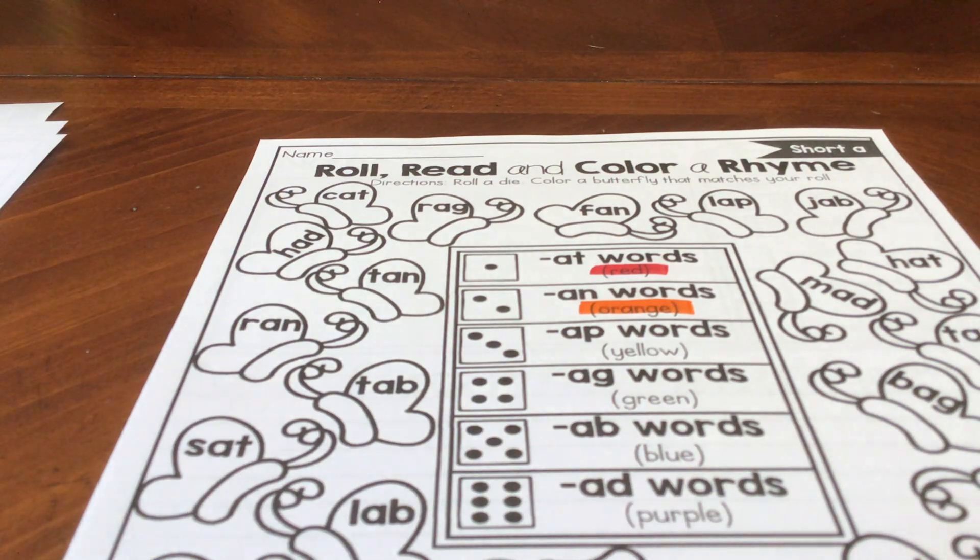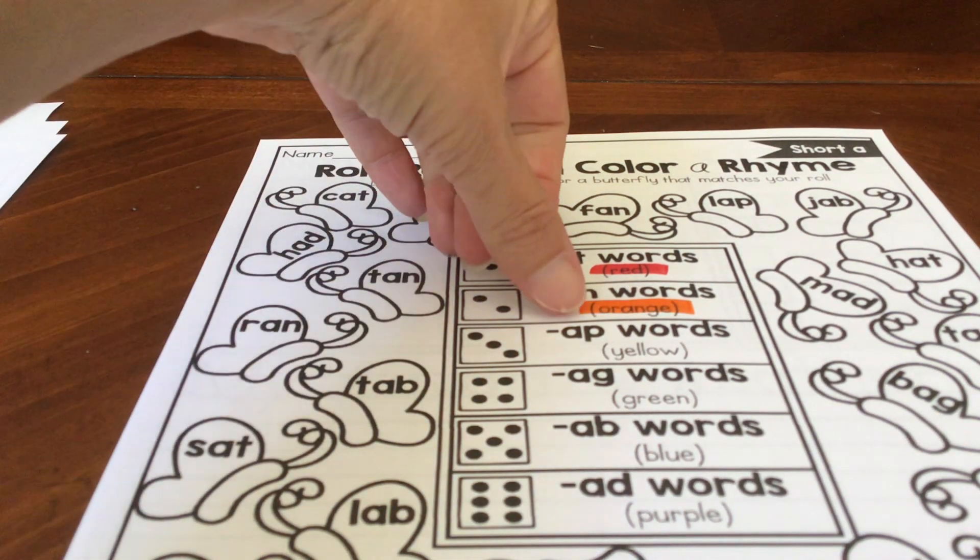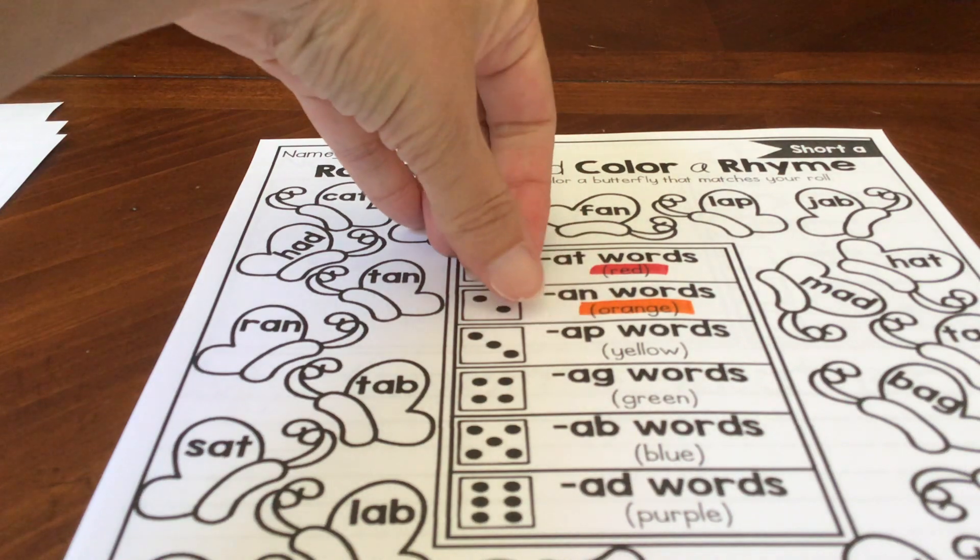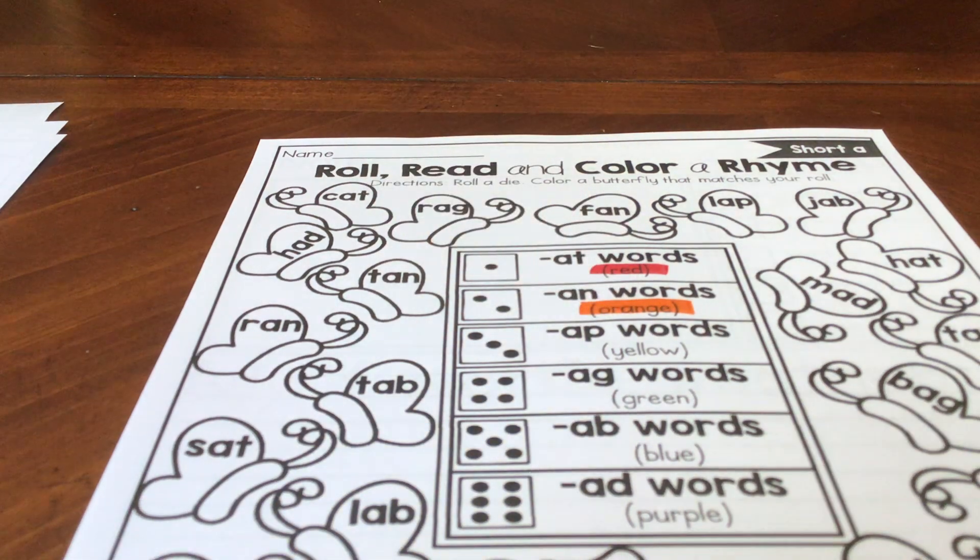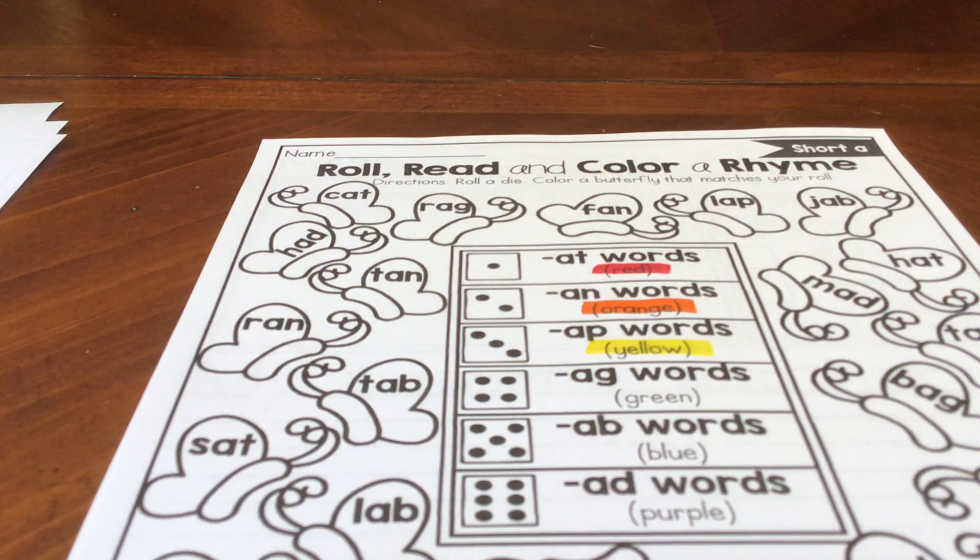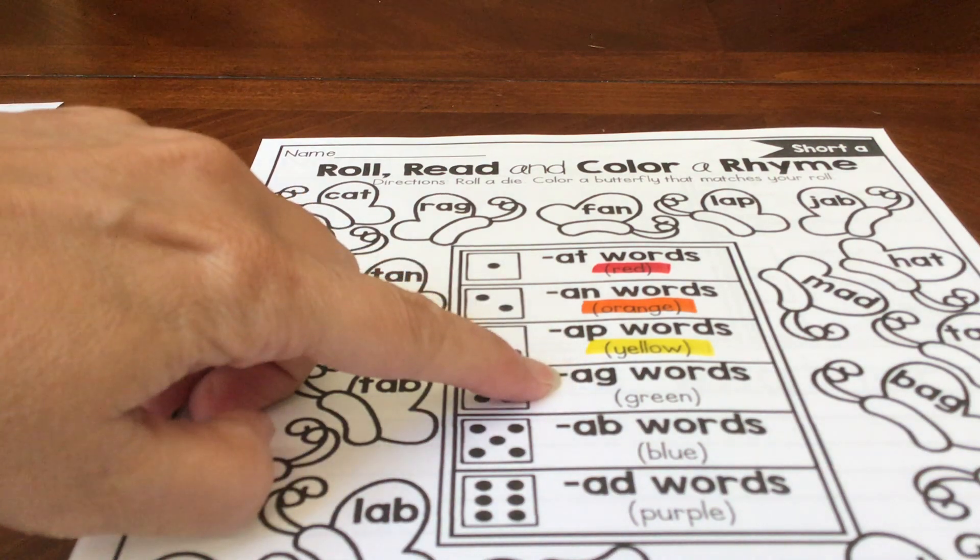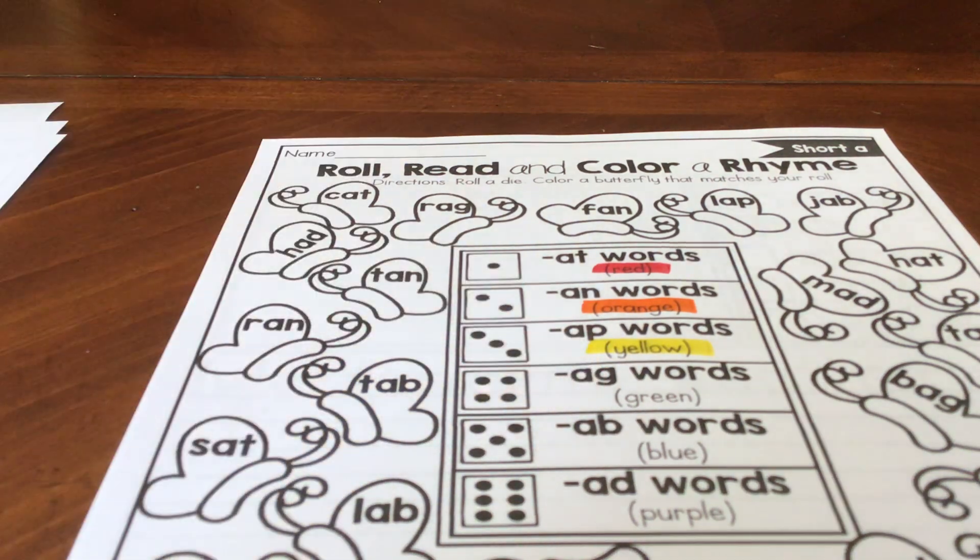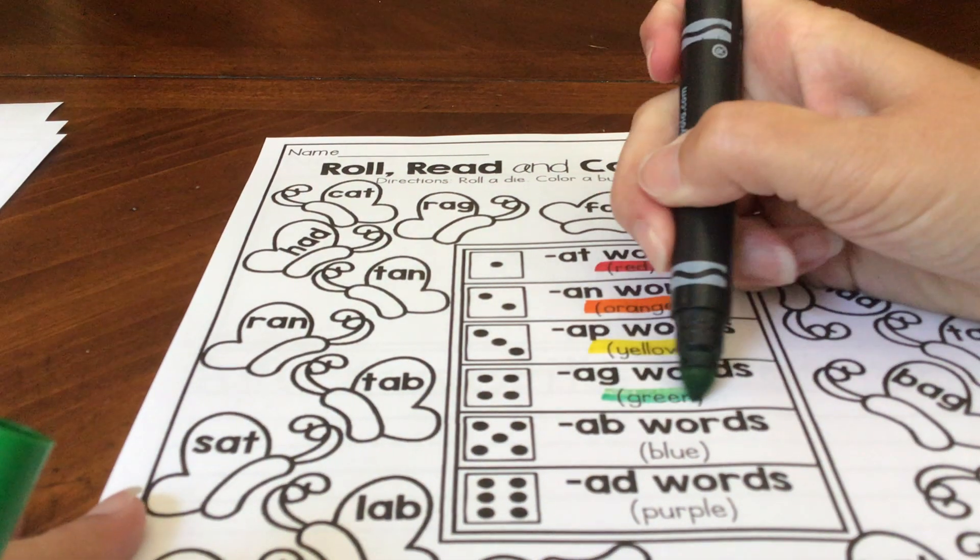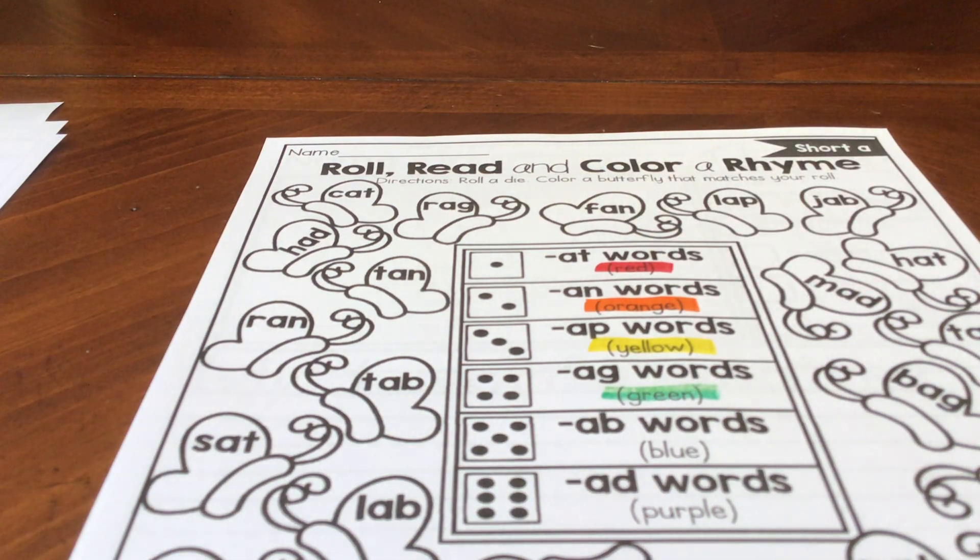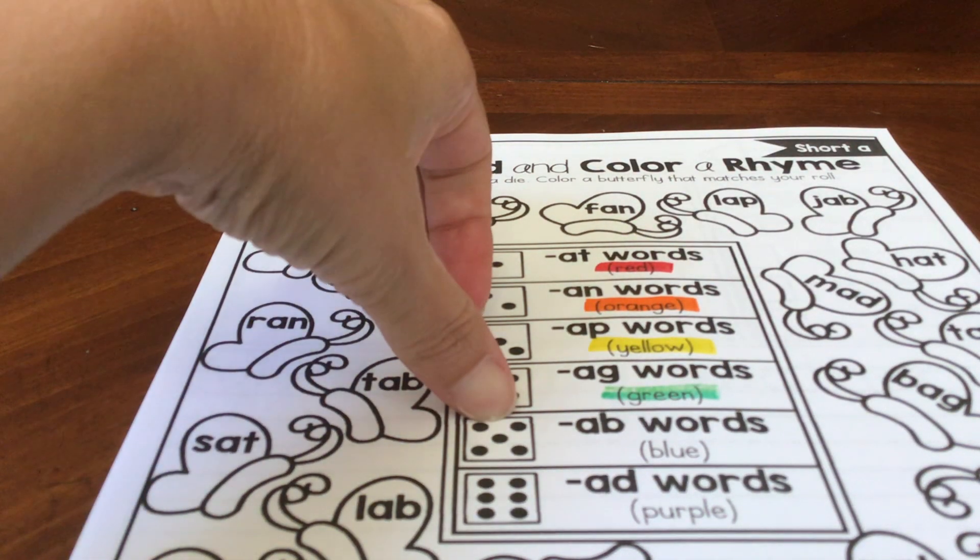If you roll a three, you're going to look for words that say app, or that rhyme with app. You're going to color those words yellow. If you roll a four, you're looking for ag words that rhyme with ag. You're going to color them green.